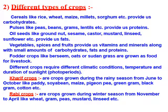Another category is Rabi crops. These are crops grown during the winter season, sown during November-December and harvested during April. Some examples are wheat, gram, pea, mustard, linseed, etc.